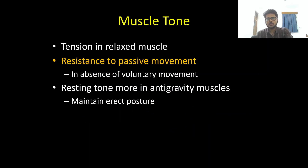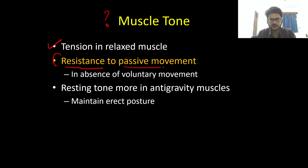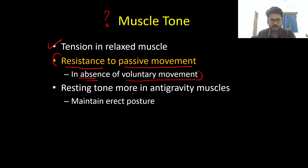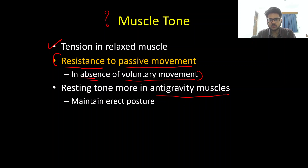So what is muscle tone? Muscle tone is basically tension in the relaxed muscle, or better defined as resistance of the muscle to passive stretch or passive movement in the absence of any voluntary movement. Naturally, the resting tone is going to be more in the anti-gravity muscles because it is these muscles that help us maintain the erect posture.